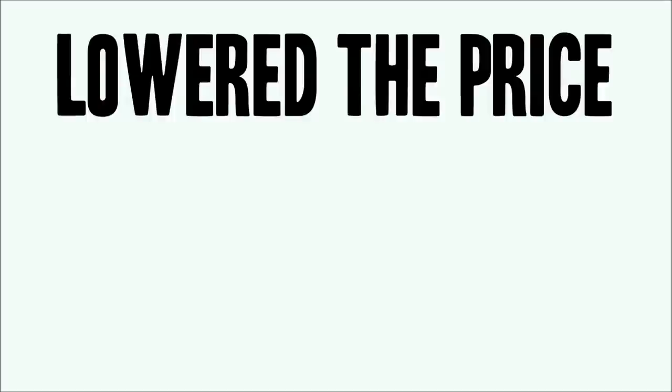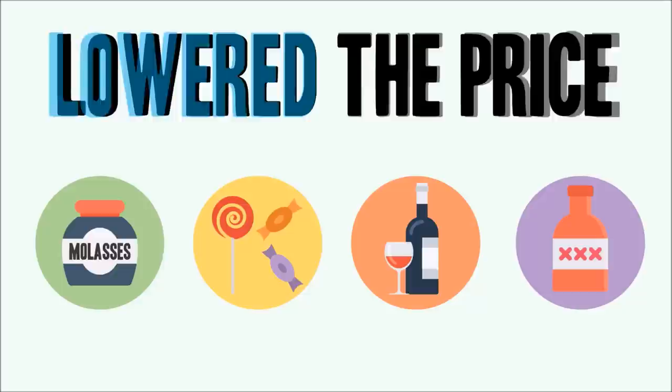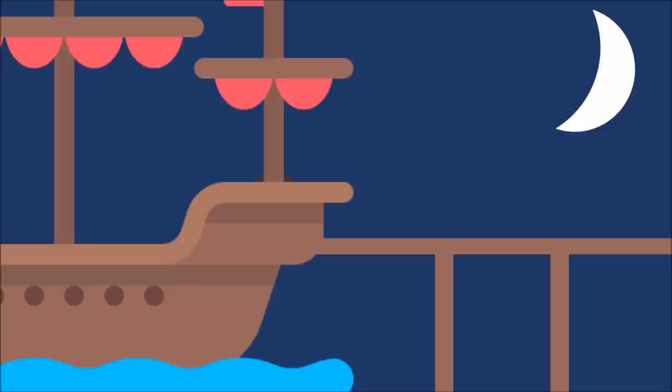In an effort to gain more money for England, the next act passed was the Sugar Act of 1764. This act lowered the price of molasses, sugar, wine, and rum. Wait — lowered? How could this possibly help the economy?